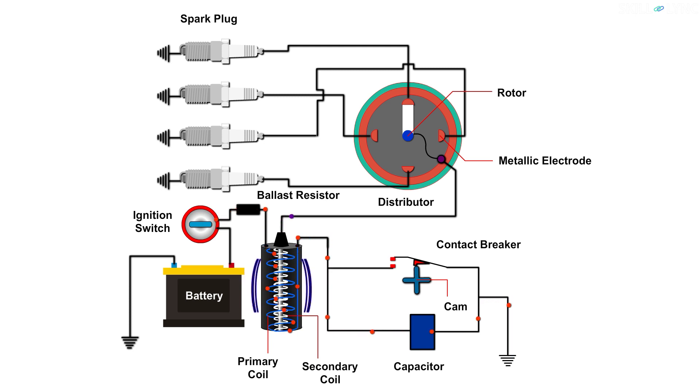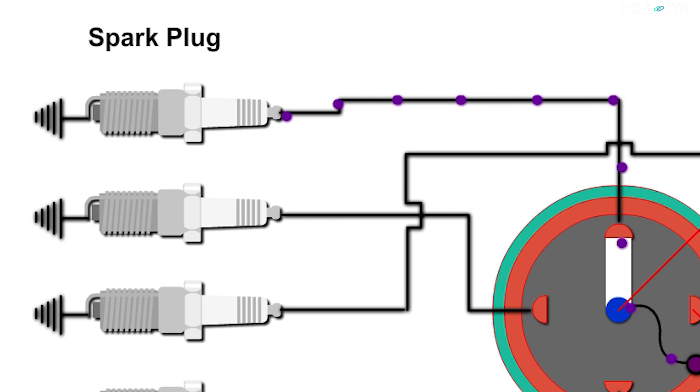The high-tension wire carries the current due to the high induced voltage from the secondary coil to the rotor of the distributor. From the rotor, the current passes through the metallic electrodes and reaches the central electrode of the spark plugs. The potential difference created between the electrodes of the spark plugs ionizes the gap in between them. Thus, the gap starts conducting current, which results in the formation of a spark.